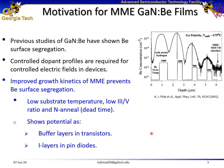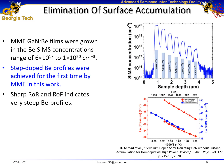Previous studies of beryllium in gallium nitride resulted in semi-insulating films, but they suffered from beryllium surface segregation. However, for devices, we need controlled dopant profiles to control the electric fields. So my motivation for this study was to utilize the improved growth kinetics of MME to eliminate the surface accumulation issue of beryllium in gallium nitride.